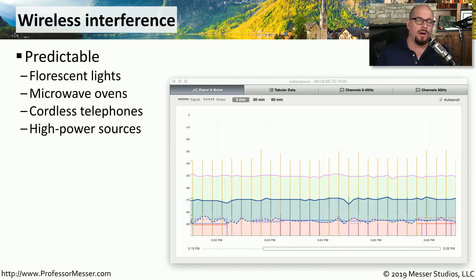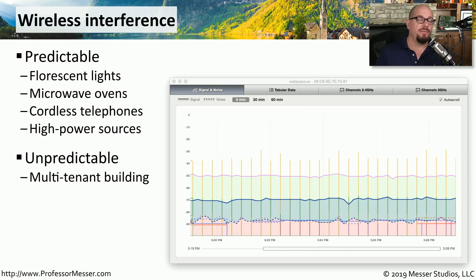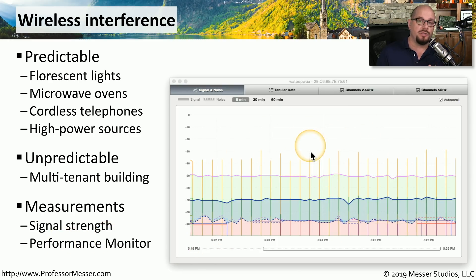Getting the best possible wireless signal can be a challenge. Many devices can create wireless signal interference, such as fluorescent lights, microwave ovens, cordless telephones, and high-power sources like transformers and generators. There's also unpredictable interference from third parties in a multi-tenant building. Some troubleshooting tools can show you signal strength — you can sometimes see this in Performance Monitor in Windows, or use a third-party tool to map signal information over an extended period of time.